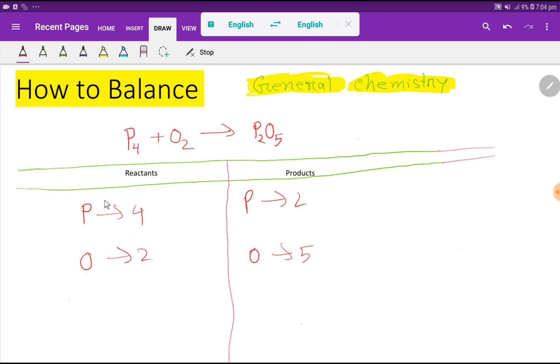To balance this reaction means we have to balance the number of phosphorus and oxygen from both sides. So look, here we have two phosphorus but here we have four phosphorus. So to balance the phosphorus, what can I do? I can simply multiply here by two, that gives me four.